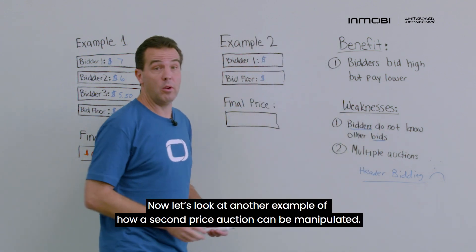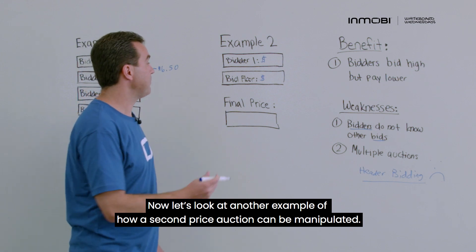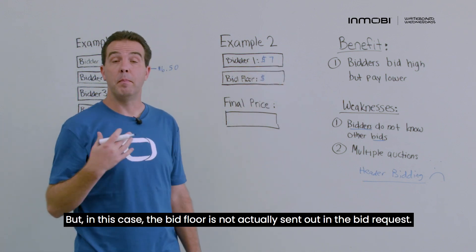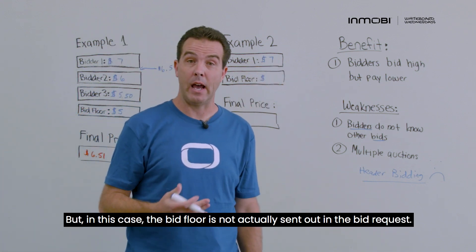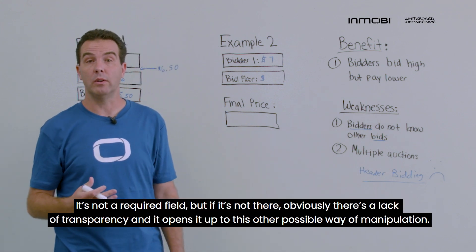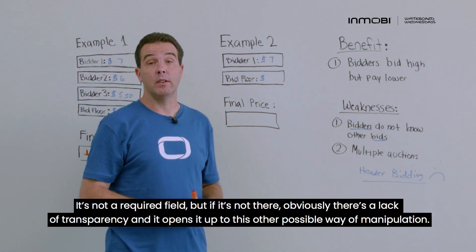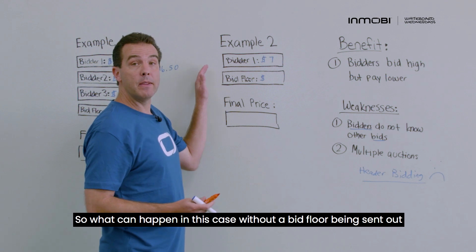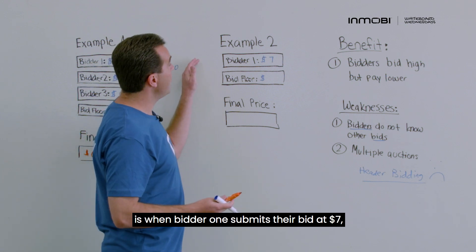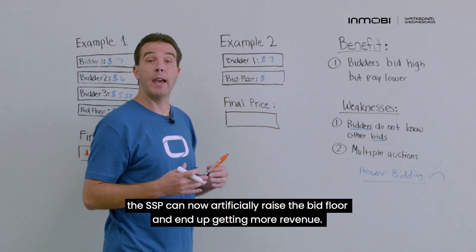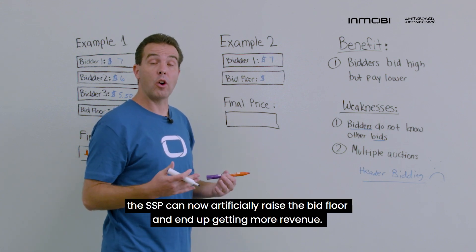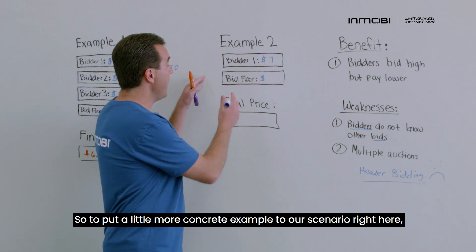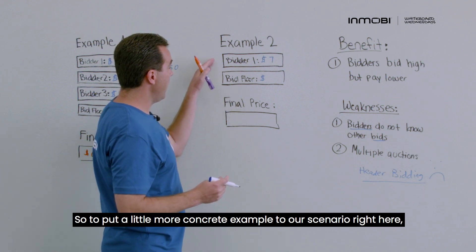Now let's look at another example of how a second price auction can be manipulated. In this example, bidder one bids $7, but the bid floor is not actually sent out in the bid request — it's not a required field. Without a bid floor being sent out, when bidder one submits their bid at $7, the SSP can artificially raise the bid floor and end up getting more revenue.